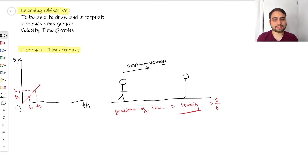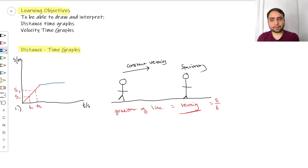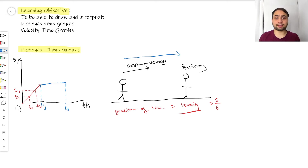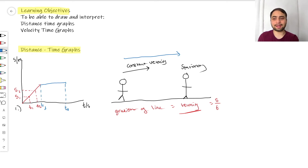Now say they get tired and want to stand still — they are stationary. On the graph, that looks like a flat horizontal line. The displacement over time from T3 to T4 is not changing, which tells us we're not moving. But notice the displacement doesn't fall down to zero — because our stick person already traveled some distance before becoming stationary, so they've still covered that same displacement.